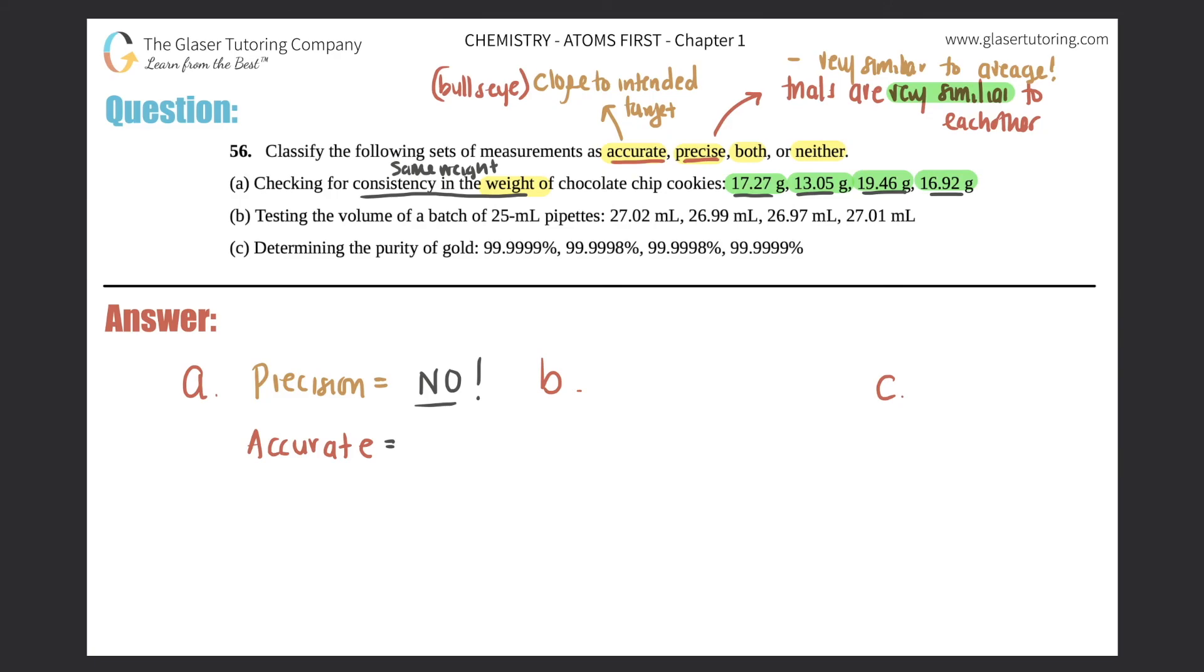They're just checking the consistency, but the consistency is all over the place: 17, 13, 19, and 16. So this person who's ever plopping the chocolate chip cookies onto the baking sheet is not being very precise nor accurate. So this one would be neither - you're neither precise, the numbers are all over the place, and you're not accurate because there's no consistency. That's what you were checking for.